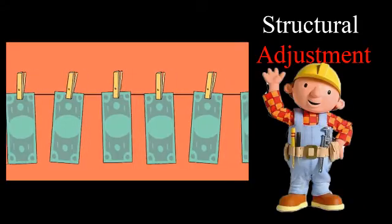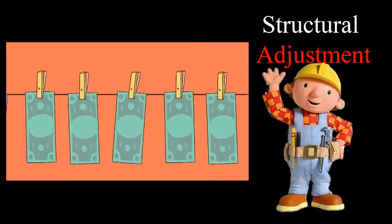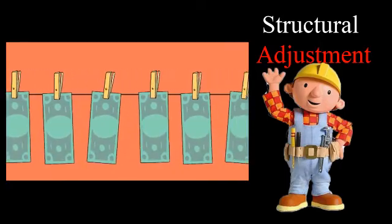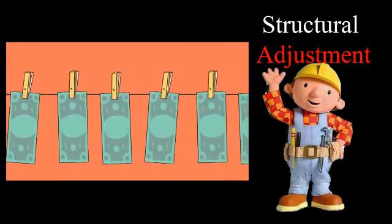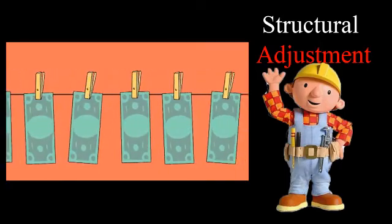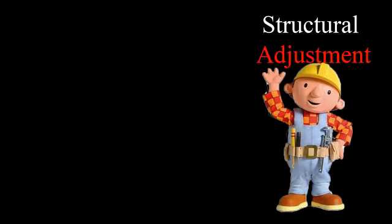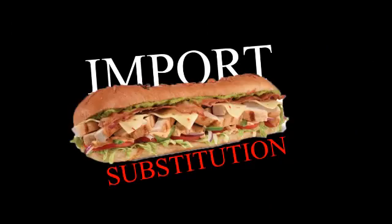Structural adjustment also provides a lot of long-term loans with interest, which could indebt countries that can't necessarily pay them back. The opposing school of thought is the import substitution policy, which essentially means self-sufficiency in the market.